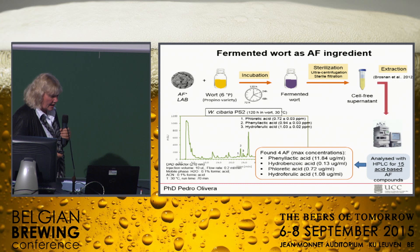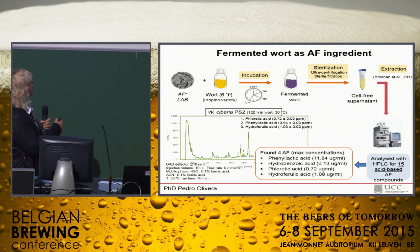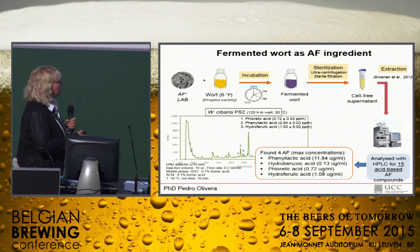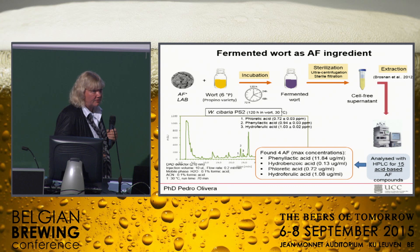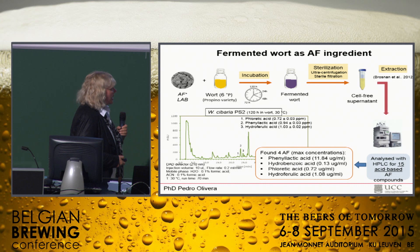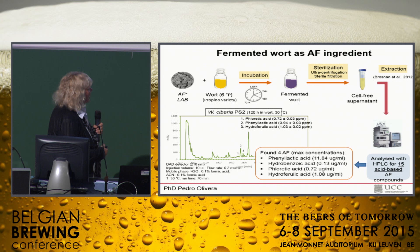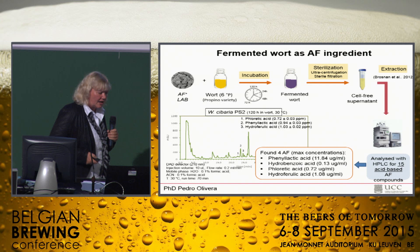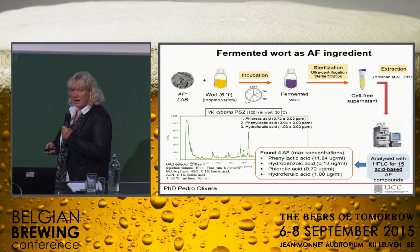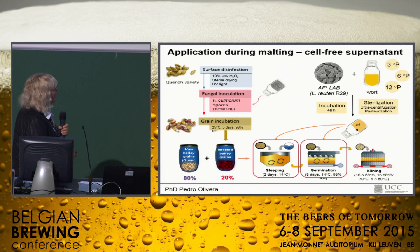What we did then was isolate the components. We take the strain, grow it up in wort, ferment it, centrifuge it, heat treat it, and then run it over HPLC — it took us years to develop that method — where we can look for acid-based antifungal compounds. Here's just one strain, which was a Weissella, where we found four antifungal compounds: phenyllactic acid, hydroxybenzoic acid, ferulic acid, and hydroxyferulic acid. We have one strain which we've patented that actually produces 22 different acid-based antifungal compounds, so this one only produced four.